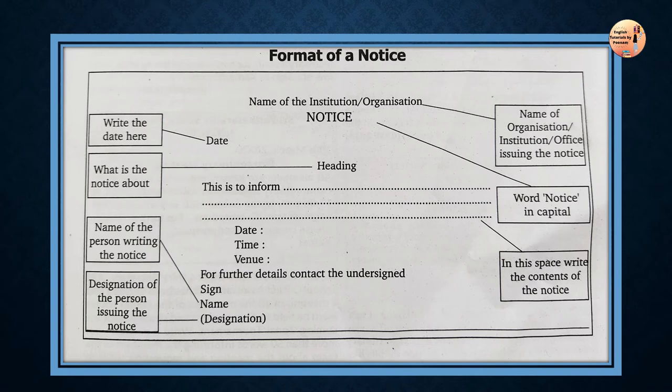Let's discuss the format of a notice once again. On the top line we write the name of the organization or institution issuing the notice, usually in capital letters, and we also mention the place. After that, if you want to leave a line you can, and then you write the word NOTICE — N-O-T-I-C-E — always in capital letters. After that we write the date. The most preferred place for writing the date is on the left-hand side, between the word NOTICE and the heading.